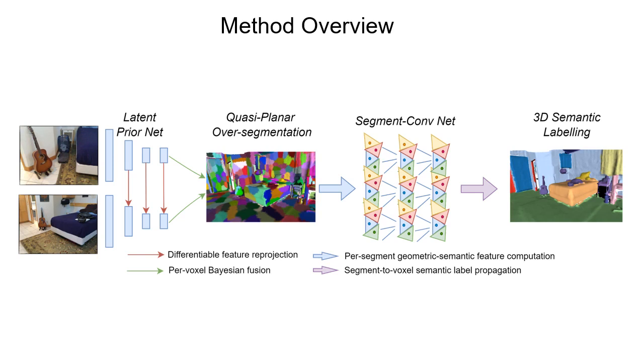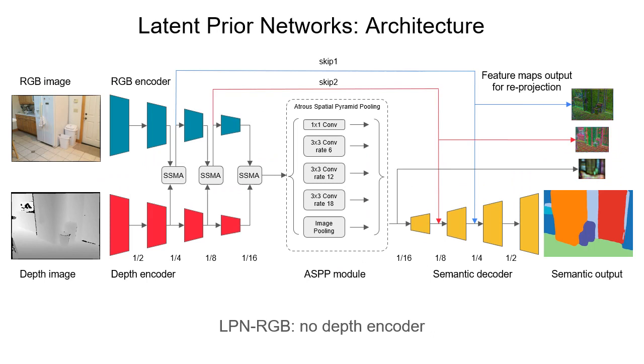And finally, segment convolutional network applies convolutions at segment level and obtains the final refined semantic labels.